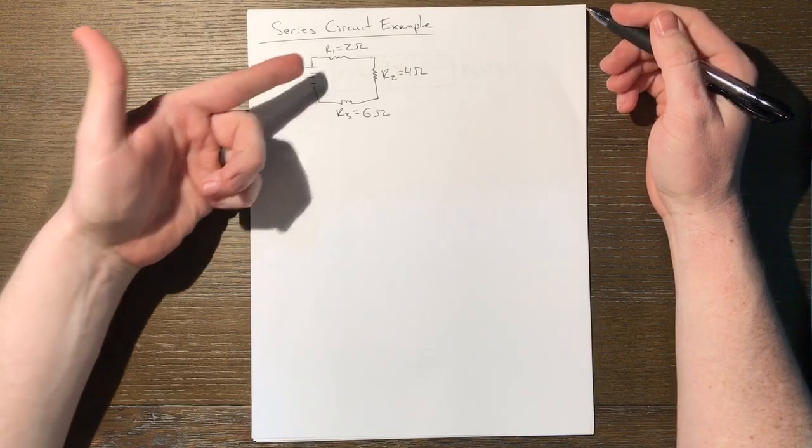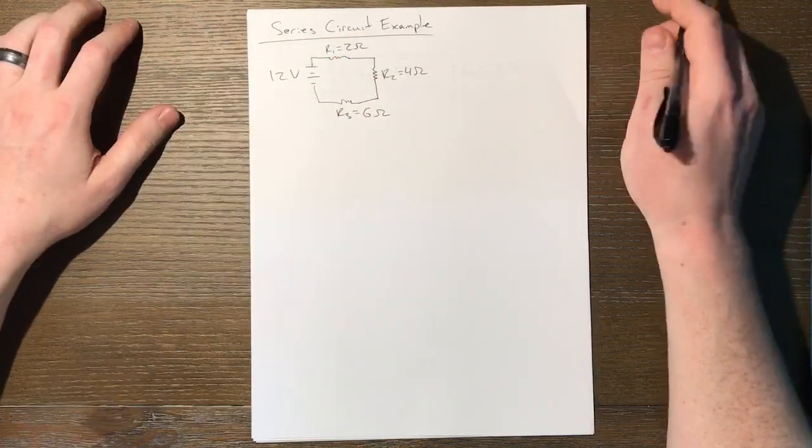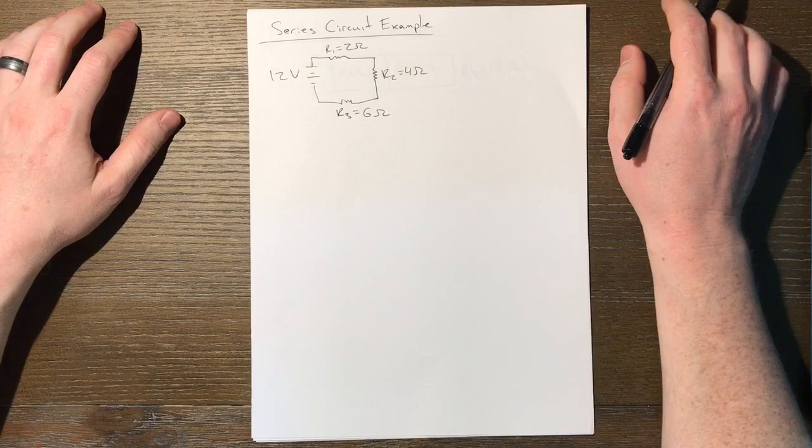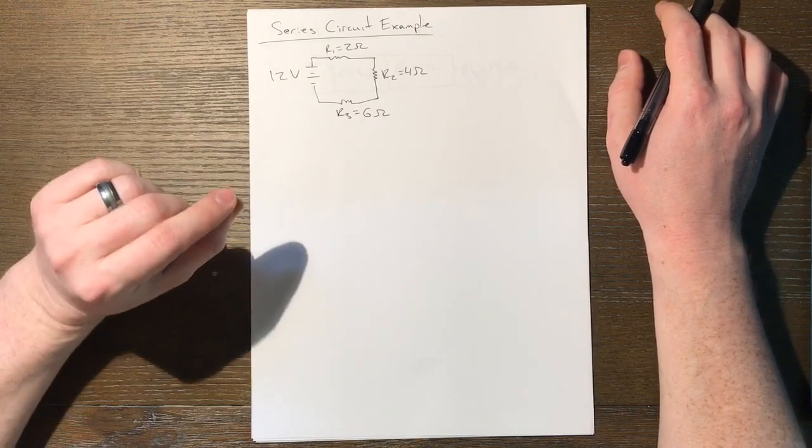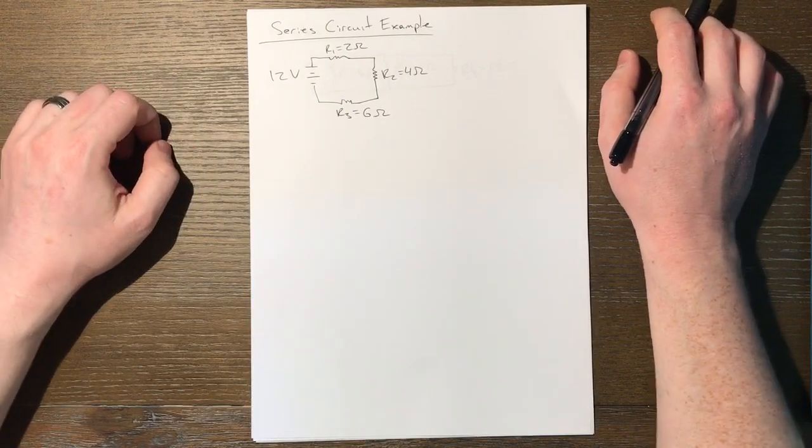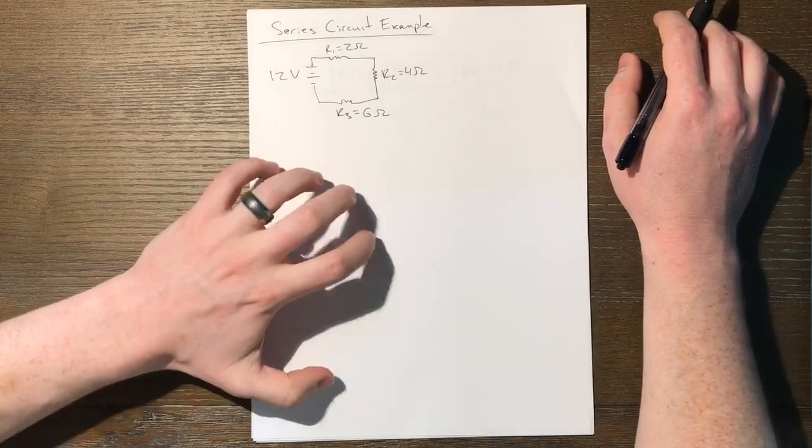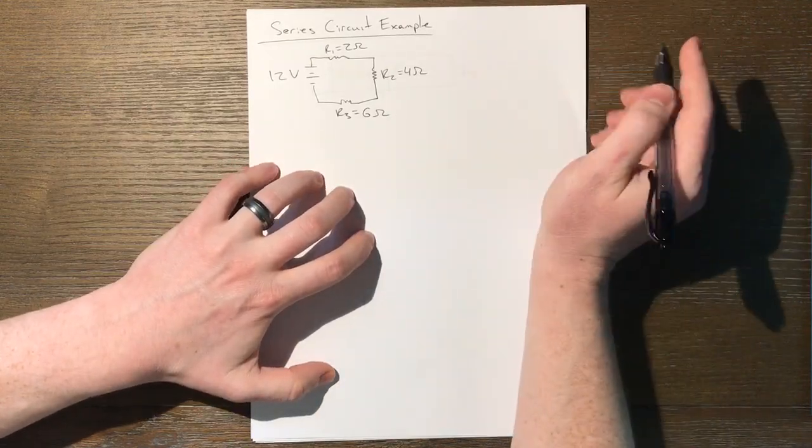We can also see we've been given a voltage and a series of resistances. Now, before you start writing those down, there's a special way that I like to keep track of all of my data in circuit problems. I like to make a little data table.